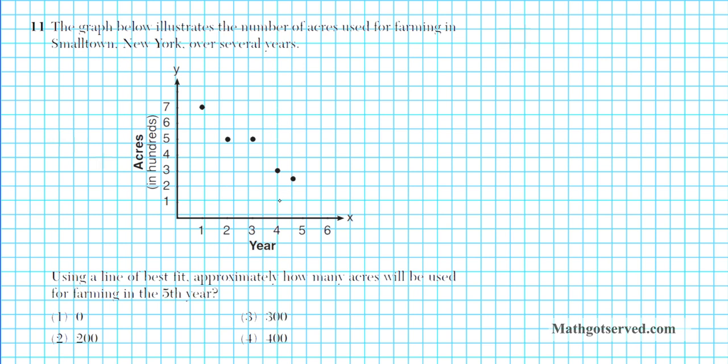So we have to draw a line of best fit in this graph right here on this collection of points and use it to estimate what the number of acres that will be used in the 5th year is going to be. So we have to find the line of best fit.